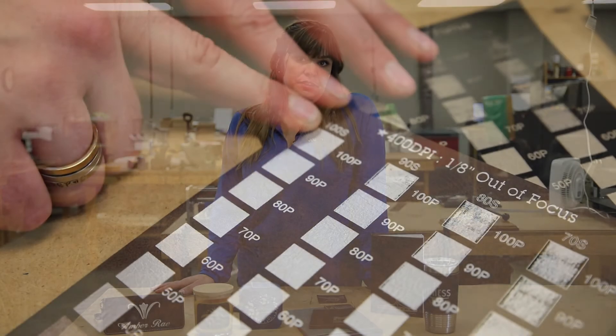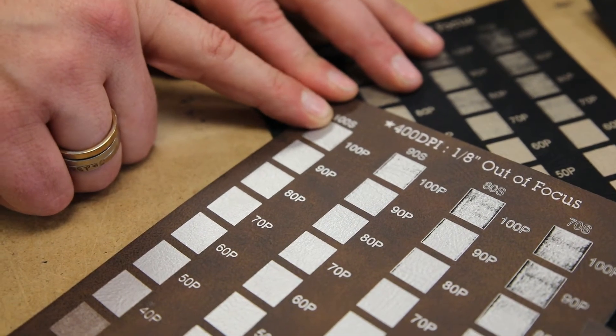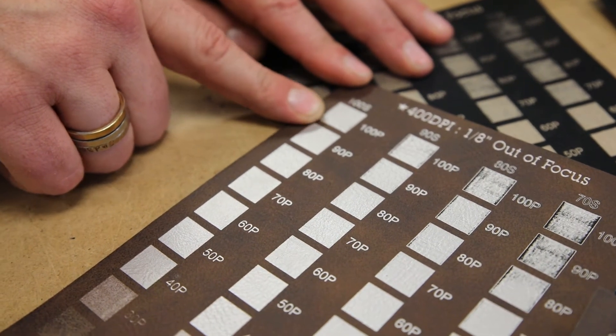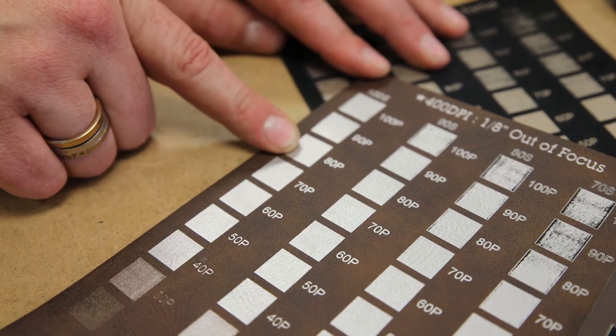Essentially you're creating a grid with each column at the same speed and each row different powers. As you can see here, I have this column at my full speed 100% and each square is a different power setting at 10% intervals.